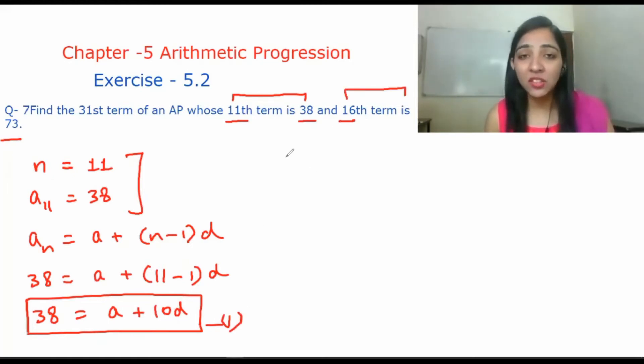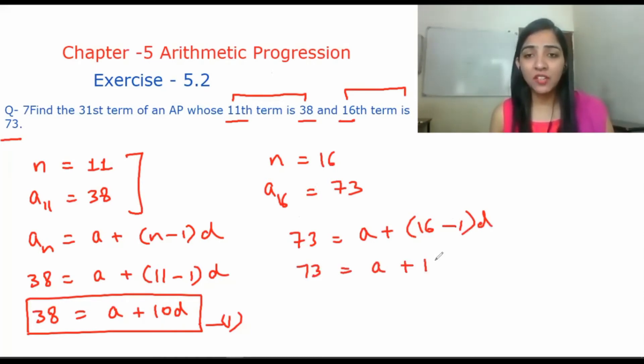The 16th term of AP is 73. This means n is equal to 16 and a_n is 73. So again we will put this formula: a_n, which is 73, equals a plus 16 minus 1 times d. So 73 is equal to a plus 15d. This is our second equation.